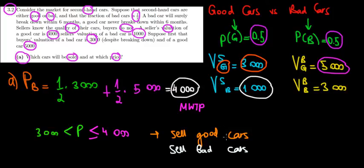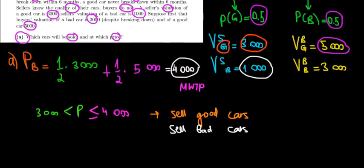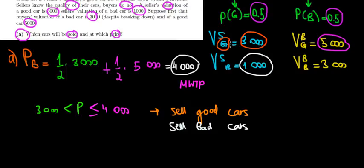One more thing to keep in mind: what happens if the price is not in that range? What if the price is less than 3,000 euros? Since the seller values the good cars at 3,000 euros, the seller needs at least 3,000 euros to sell a good car. So if he gets 2,999 euros, which is less than the valuation of the seller of a good car, then good cars would not be sold.